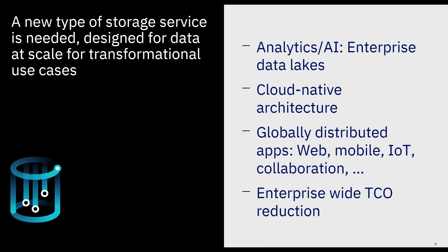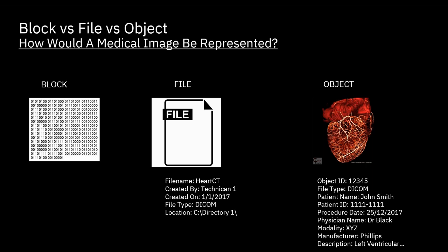I encourage you to deep dive into the TCO conversation once you identify what customers are doing with their business and what storage capability they need. Very simply, there are three types of cloud data storage: object storage, file storage, and block storage. Each offers advantages and has its own use cases. Applications developed in the cloud often take advantage of object storage's scalability and metadata characteristics. Block storage is more binary; file storage has metadata but it's very limited.